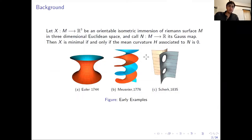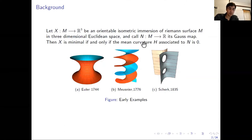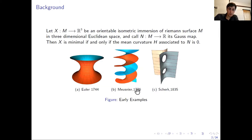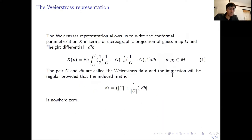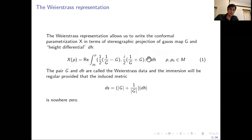A minimal surface in three-dimensional space is an orientable isometric immersion of a Riemann surface with mean curvature zero. You can see some of the earliest examples here: the one on the left is a catenoid, the one in the middle is a helicoid, and the one on the right is a single-periodic Scherk surface or saddle tower. For every minimal surface in R3, we have the so-called Weierstrass representation that allows us to write the conformal parameterization in terms of the stereographic projection of the Gauss map and the height differential DH given by this map.